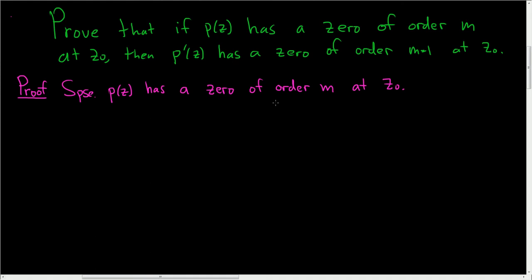Then we'll just write down what this means. So this means that there exists a function which we'll call q, a polynomial function, such that p of z is equal to z minus z naught to the mth power times q of z, where q of z naught is not equal to 0.